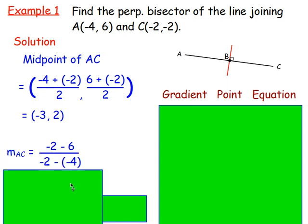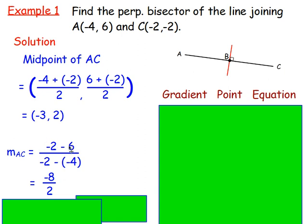Doing that then, so we're using A and C. y2 take y1, so negative 2 takes 6 over negative 2 take away negative 4 will give us negative 8 over 2, which simplifies to negative 4. That's going to be the gradient of AC.